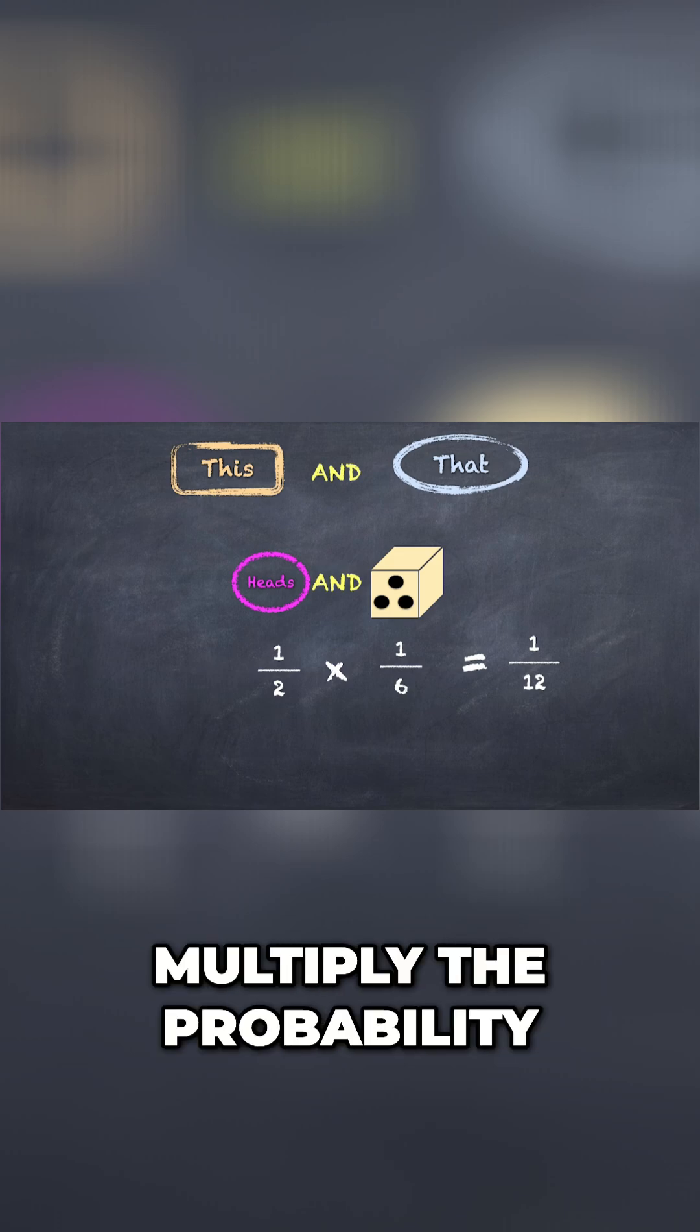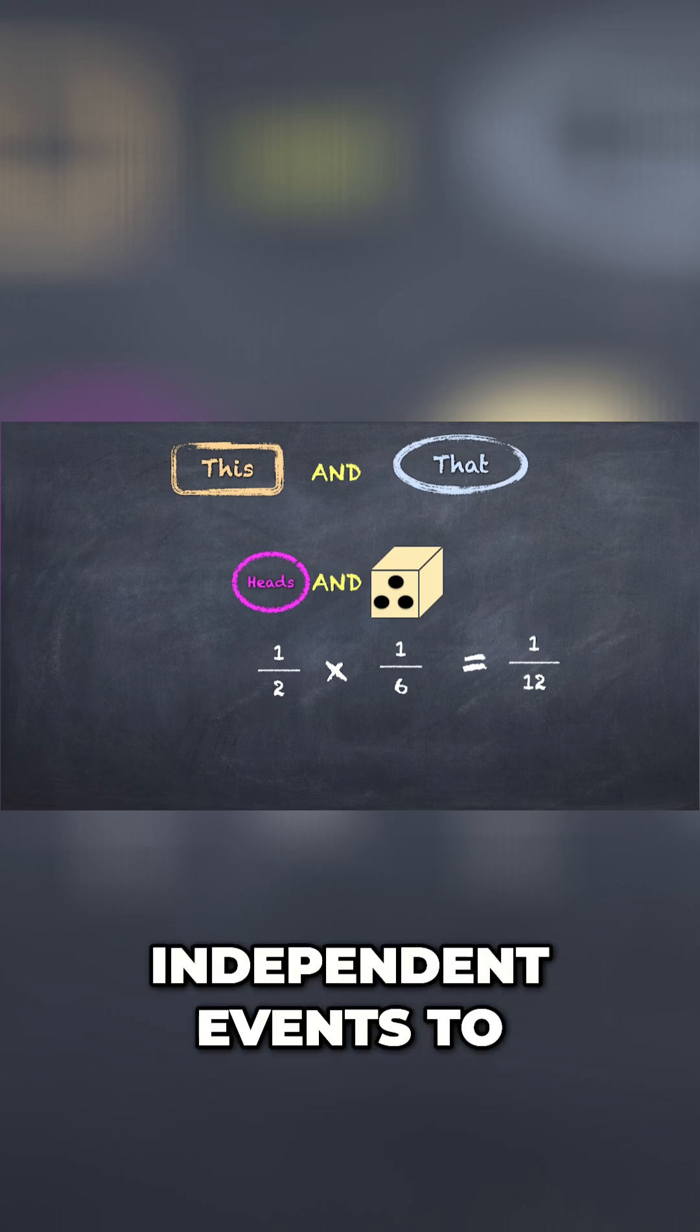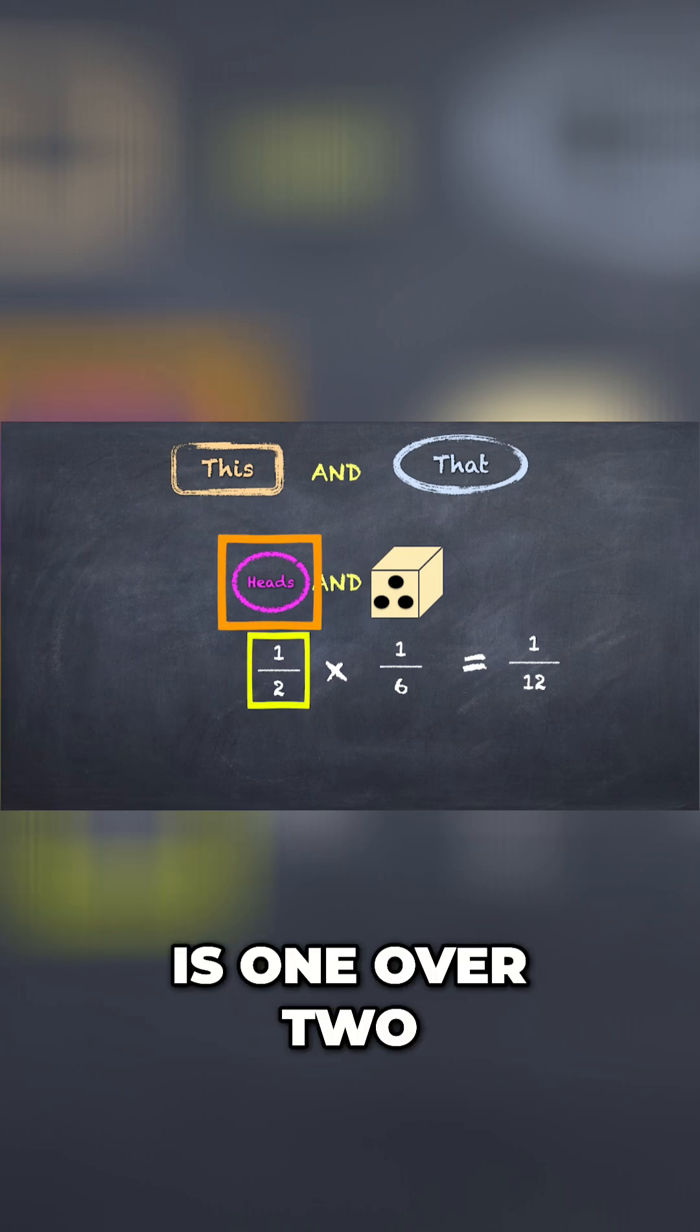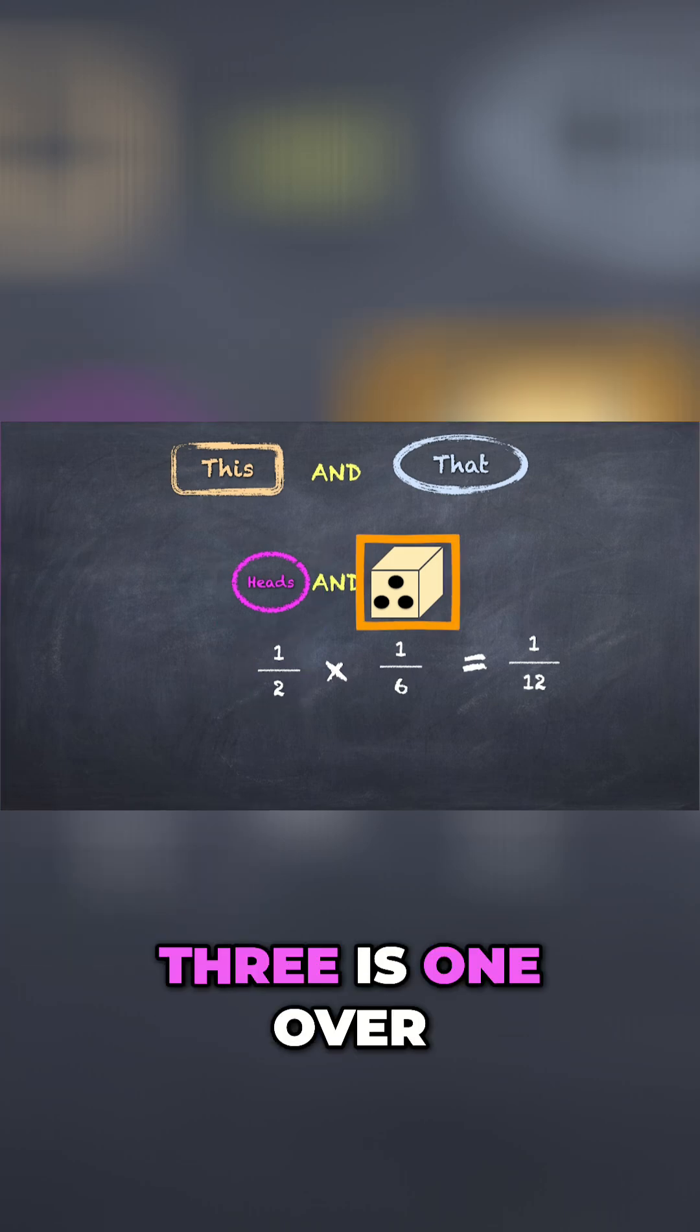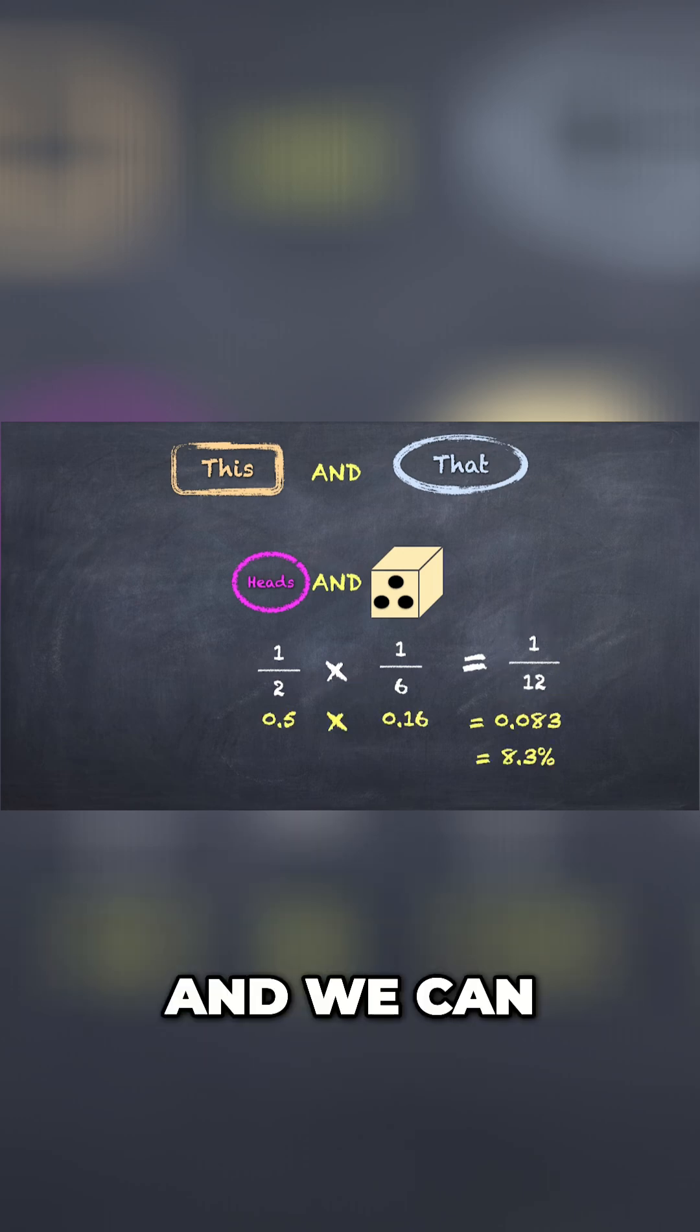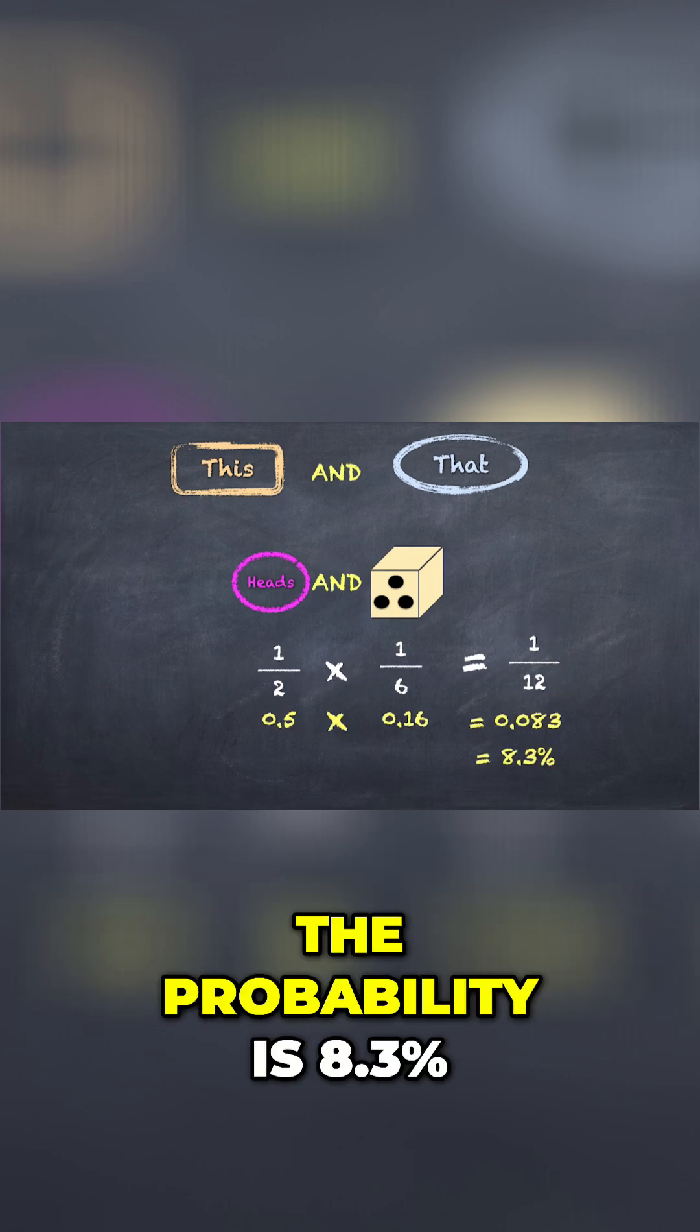We can simply multiply the probability of each of these independent events to get the answer. So the probability of getting heads is 1 over 2, and the probability of rolling a 3 is 1 over 6. Multiply them together, and voila, you get 1 over 12. And we can quickly do the maths and calculate that the probability is 8.3 percent.